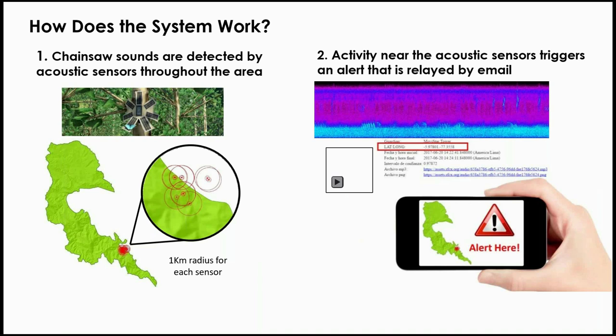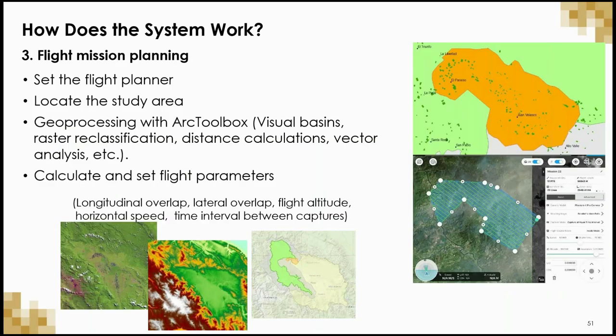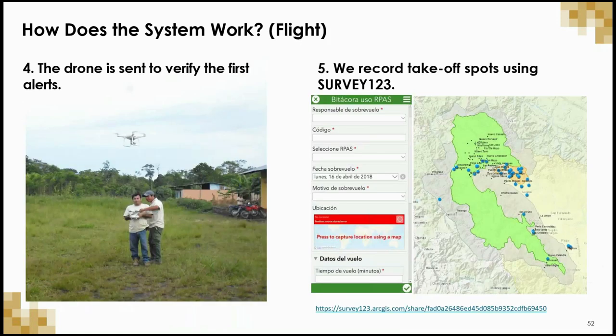The first step in this system is that multiple acoustic sensors were set up throughout the region. If these sensors were triggered by a loud noise like a chainsaw or large equipment, an email alert is sent out to the Peruvian National Forest Conservation Program. Based on the information in the alert, the study area and the flight parameters for the drones can be established and the drone can be brought to the field. Once in the field, the first task is to verify that the alert was actually correct to ensure that there is, in fact, illegal activity. All of the takeoff spots in this process were recorded using Survey123, a data gathering and sharing app that will be discussed in the next session.